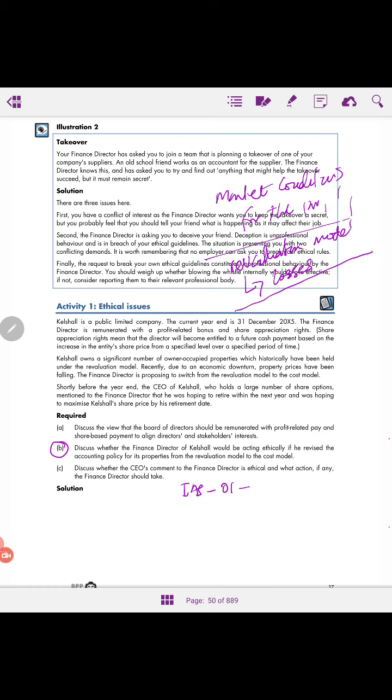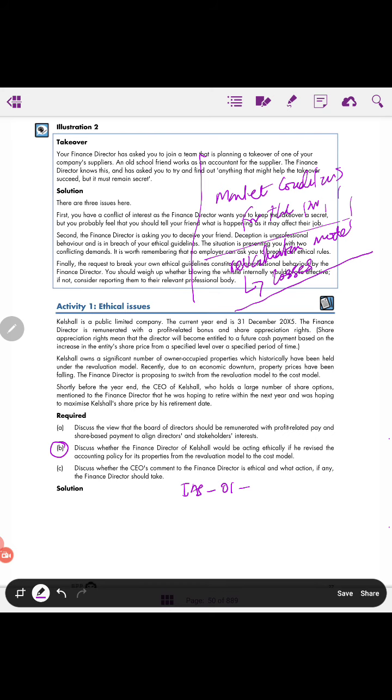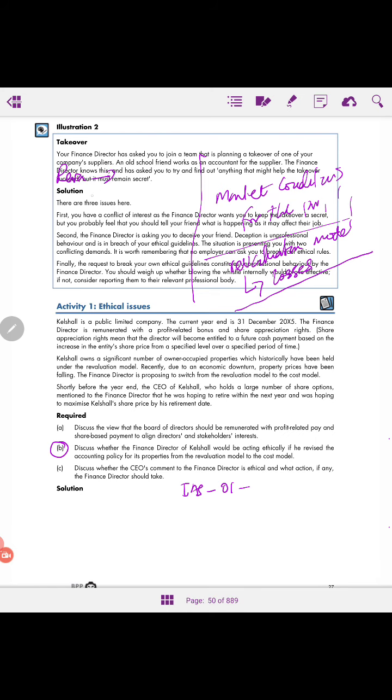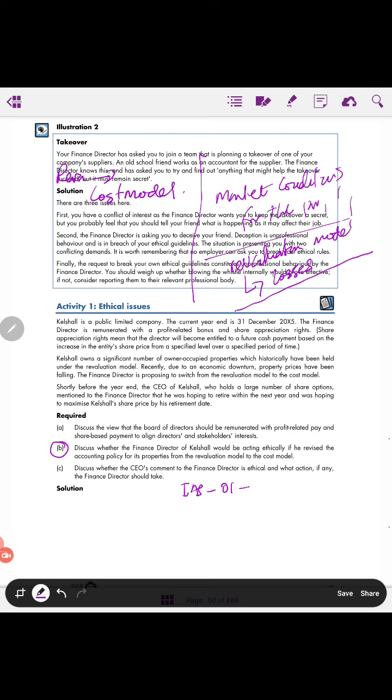The finance director is thinking that in order to mitigate this, what he is planning is to change from revaluation model to cost model. When this change happens, the expectation of the finance director is that when changing to cost model, there will be significant savings. The bottom line in the profit and loss account will be much better. As a result, when the profits are bigger, the finance director's remuneration will be related to the bottom line, which is profit, and the bonuses according to short-term profits, so he might benefit better. That was his thinking.